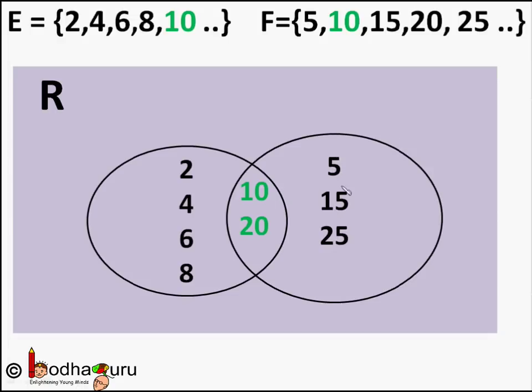And the leftover part of the right circle are the numbers which are multiples of 5 but not even numbers. This includes numbers like 5, 15, 25 and so on.